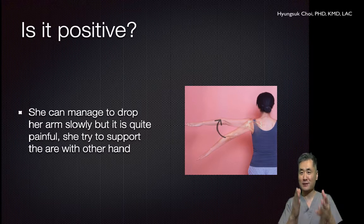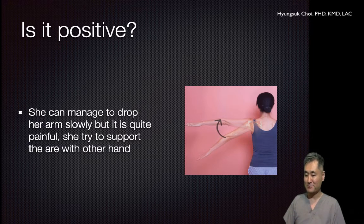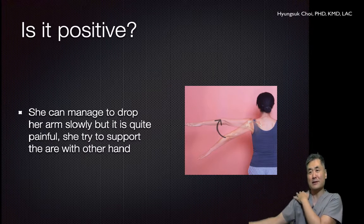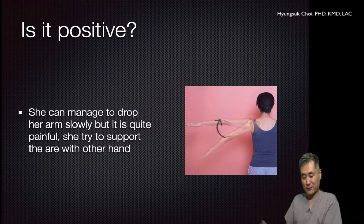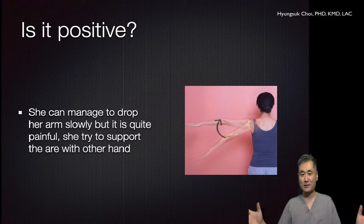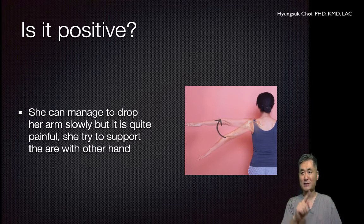We discuss this a lot: what is the difference between just dropping the arm — the conventional textbook positive result — and being able to lower the arm but it hurts, needing to support the falling arm, or feeling apprehension? What is the difference between the two results? The only difference is severity.